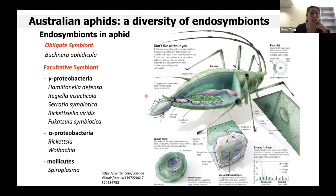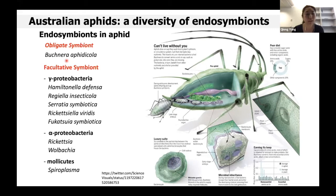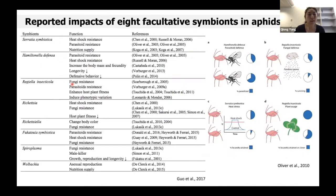So what is an endosymbiont? Endosymbionts are bacteria that live within the cells of aphids in a symbiotic relationship. Almost all aphids require an obligate endosymbiont called Buchnera that provides nutrients they cannot obtain from the plant phloem. In addition, aphids may also be infected with one or more secondary endosymbionts, which can provide many benefits to aphids — for example, heat shock resistance and parasitoid resistance.